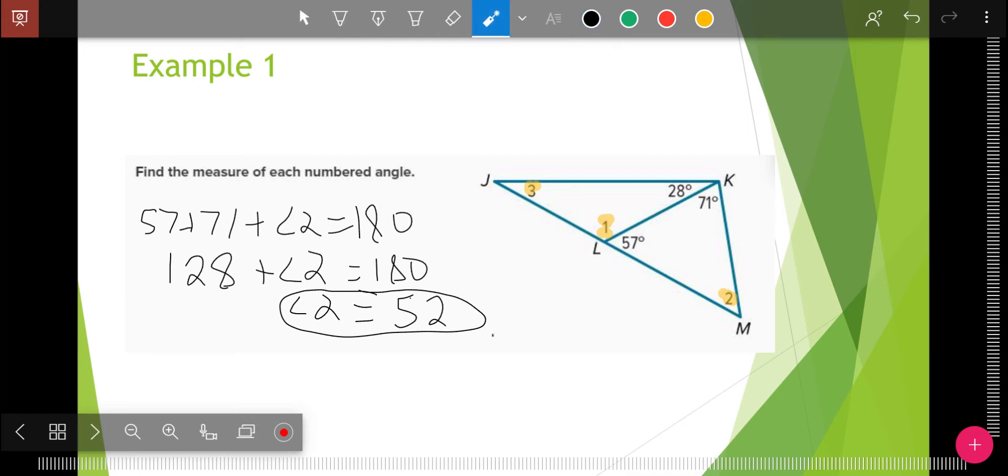The other thing I noticed right away is that angle one and this 57 are beside each other, and they're on a line. They're what we call a linear pair. And so they should add up to 180. And so I know already that angle one plus 57 equals 180. So angle one, if I minus the 57 over, equals 180 minus 57, which is 123.